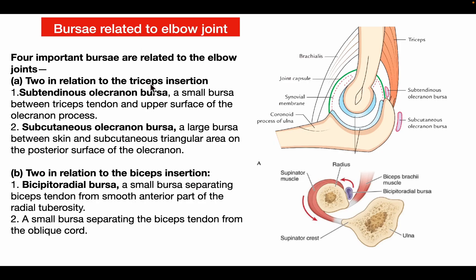Bursa related to the elbow joint: there are four important bursae — two in relation to the triceps insertion and two in relation to the biceps insertion. The subtendinous olecranon bursa is a small bursa between the triceps tendon and the upper part of the olecranon process. The subcutaneous olecranon bursa is a large bursa between the skin and the subcutaneous triangular area on the posterior surface of the olecranon process. The bicipitoradial bursa separates the biceps tendon from the smooth anterior part of the radial tuberosity, and a fourth small bursa separates the biceps tendon from the oblique cord.